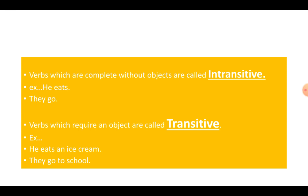Verbs which are complete without objects are called intransitive. We call them intransitive verbs. Like, he eats. What he eats? I don't know. They go. Where do they go? I don't know. So, there are no objects in the sentence. So, these verbs are intransitive verbs.